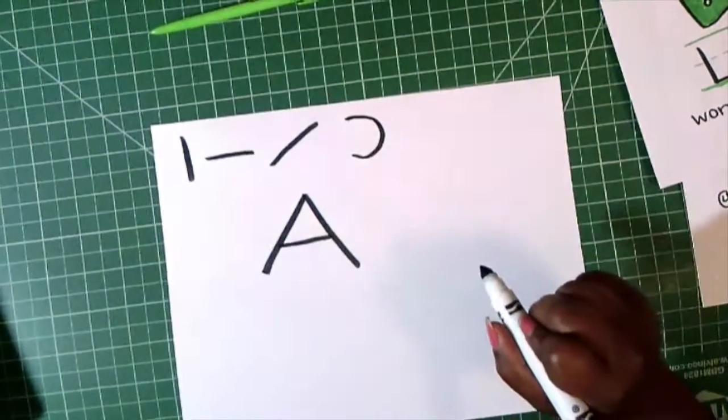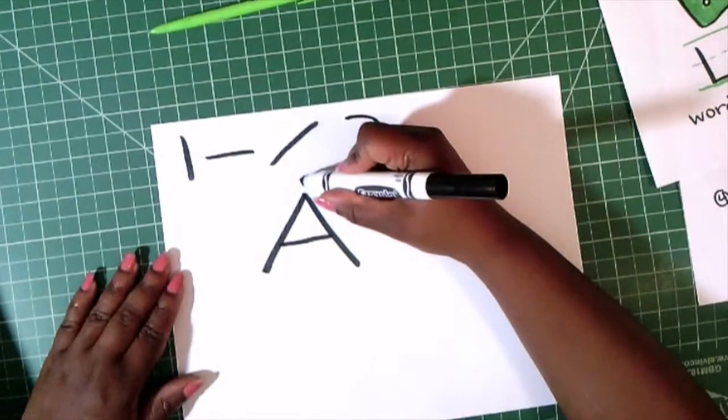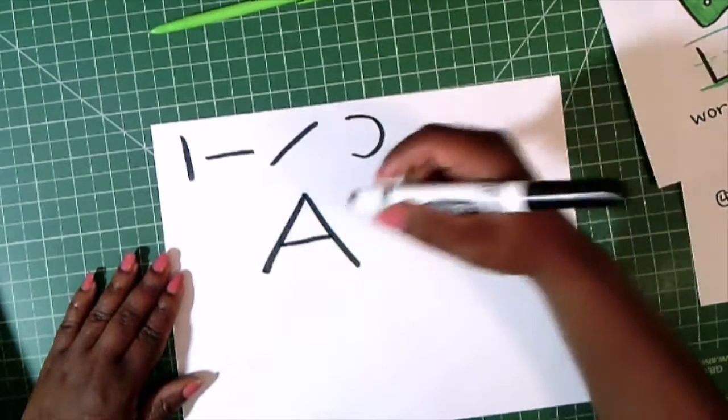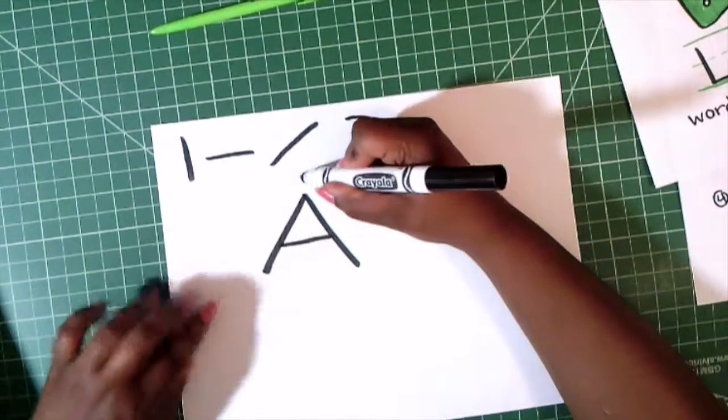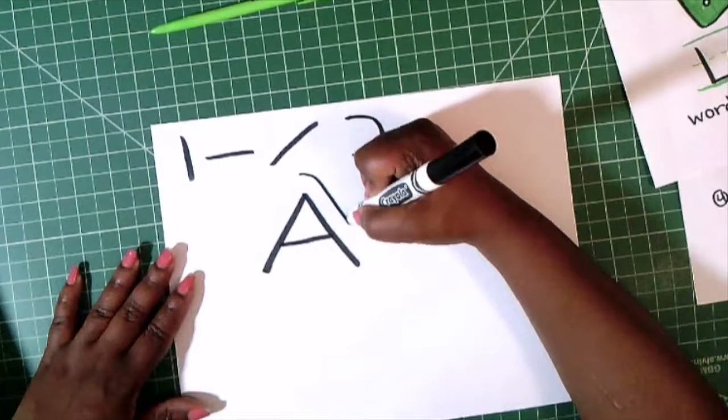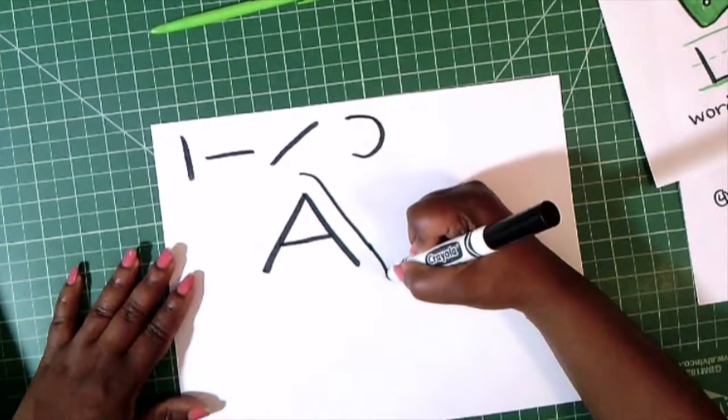To transform this into a block or bubble letter, all I need to do is take my marker and follow the directions of the lines that already exist. So I'm drawing around, giving some space between my handwritten letter and where I'm starting my block or bubble letter. I go down to the end, follow the direction of the lines, diagonally and down,